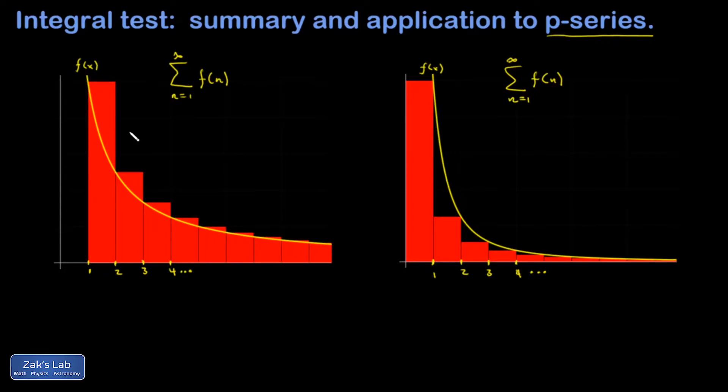If I write some things in here, the height of the first rectangle is f of 1, but the width is 1, so the area of it is f of 1. The height of the second rectangle is f of 2, but the width is 1, so its area is f of 2 and so on. And then if I put all those areas together, well, that's really just the infinite series under consideration.